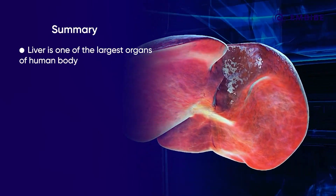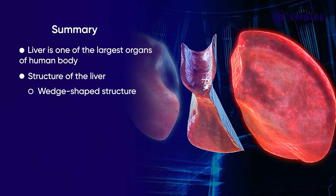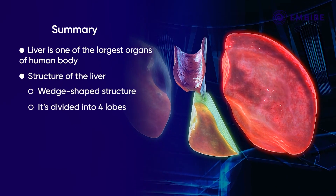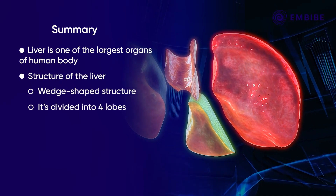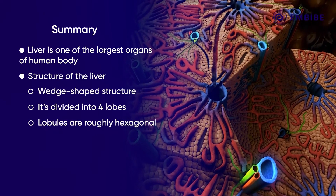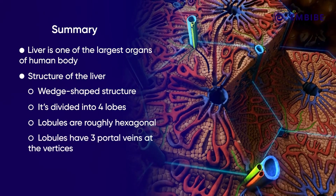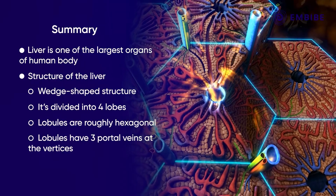To summarize: the liver is one of the largest organs of the body. It is a wedge-shaped structure divided into four lobes. A lobule is roughly hexagonal in shape with three portal canals at the vertices.